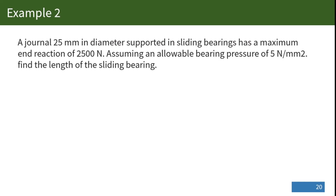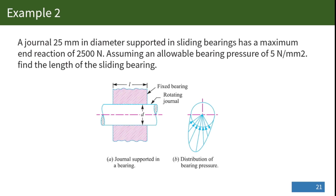Let's consider another example involving a journal. A journal whose diameter is 25 mm is supported in sliding bearings and has a maximum end reaction of 2,500 newtons. Assuming an allowable bearing pressure of 5 N/mm² (5 MPa), we are required to find the length of the sliding bearing. The journal of 25 mm diameter is subjected to a load of 2,500 newtons, and we need to find this length.